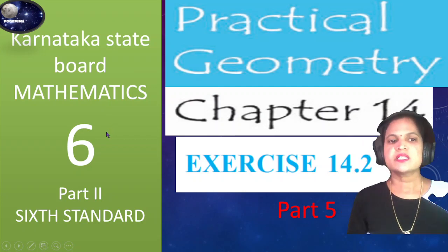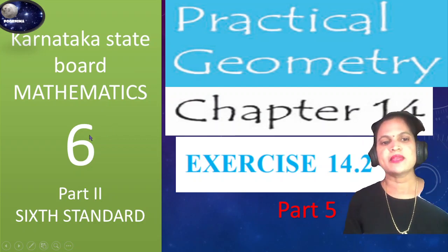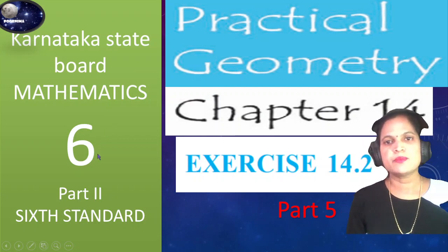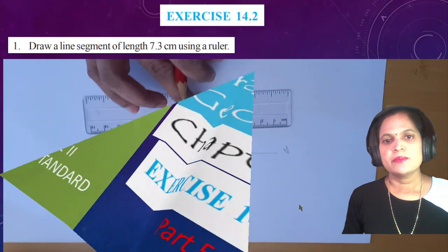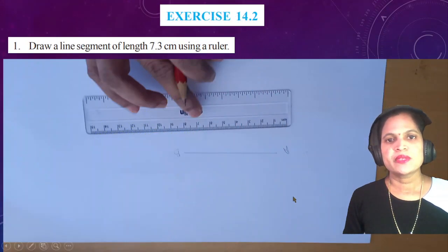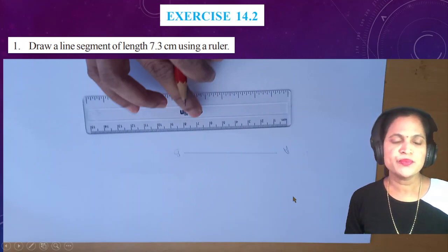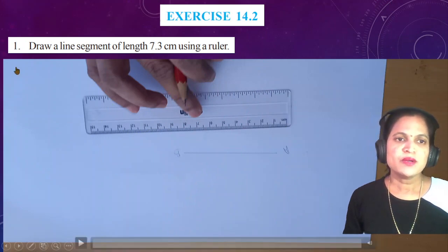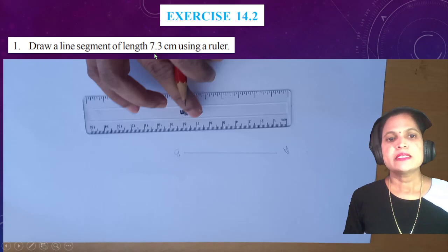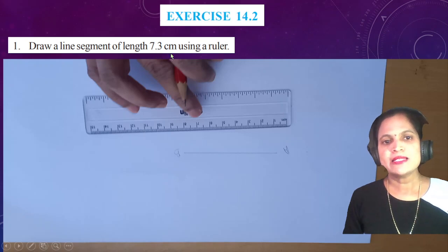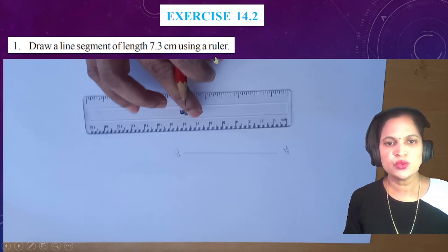Welcome to Karnataka State Board Mathematics, 6th Standard, Practical Geometry, Chapter 14, Exercise 14.2, Part 5. First question: draw a line segment of length 7.3 cm using a ruler.